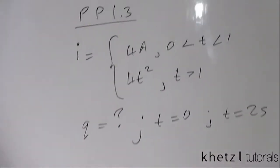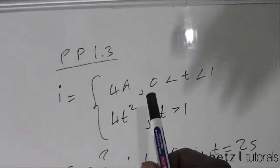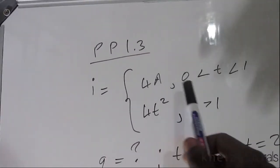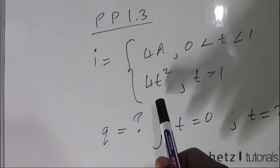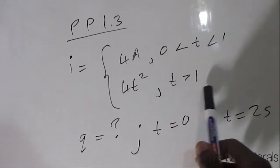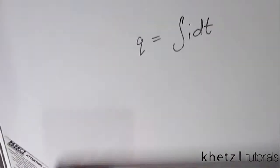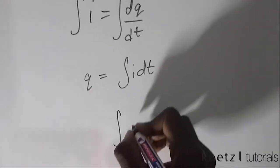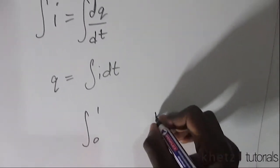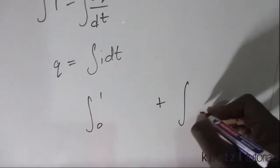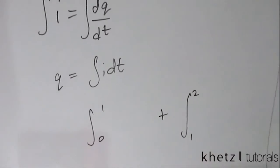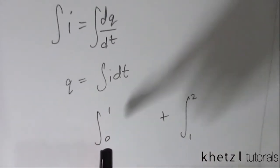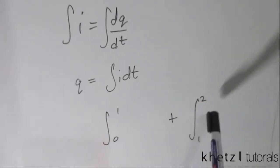Now coming back to this function, it is a piecewise function. So this formula applies between these times and this formula applies at this time. So integrating from 0 to 1 and adding the integral from 1 to 2 is ultimately the integral from 0 to 2.